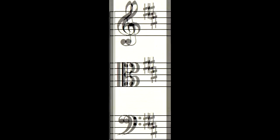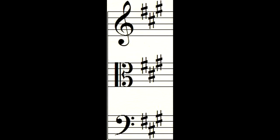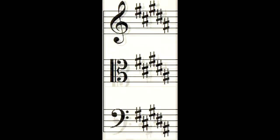Finding half steps when sharps are in the key signature is also easy. First, remember that the order of the sharps is F, C, G, D, A, E, B.